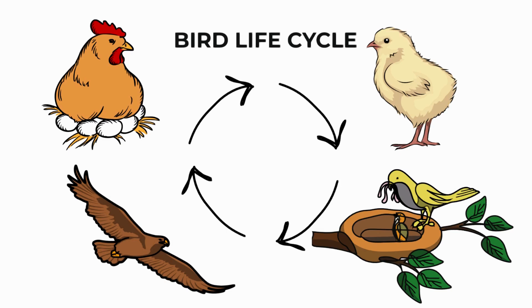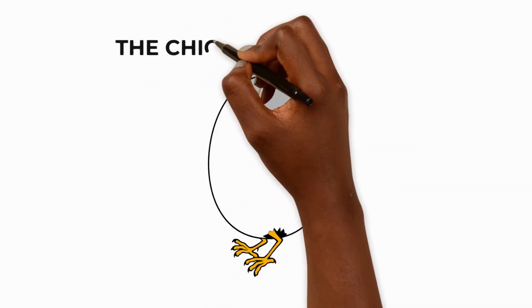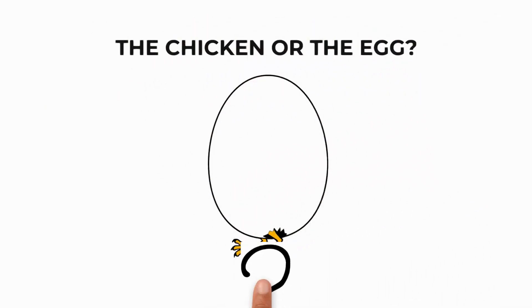So, which came first? Well, actually, the answer is both. The life cycle of a bird starts with an egg, but it also starts with an adult bird laying that egg.